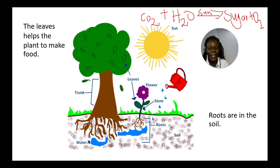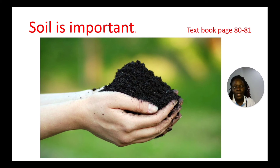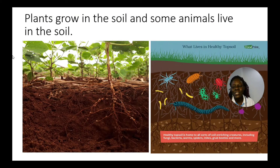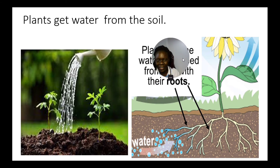The roots are in the soil — they absorb water to be used by the plant. Soil is important. Plants grow in the soil and some animals live in the soil too. Plants get water and nutrients from the soil.